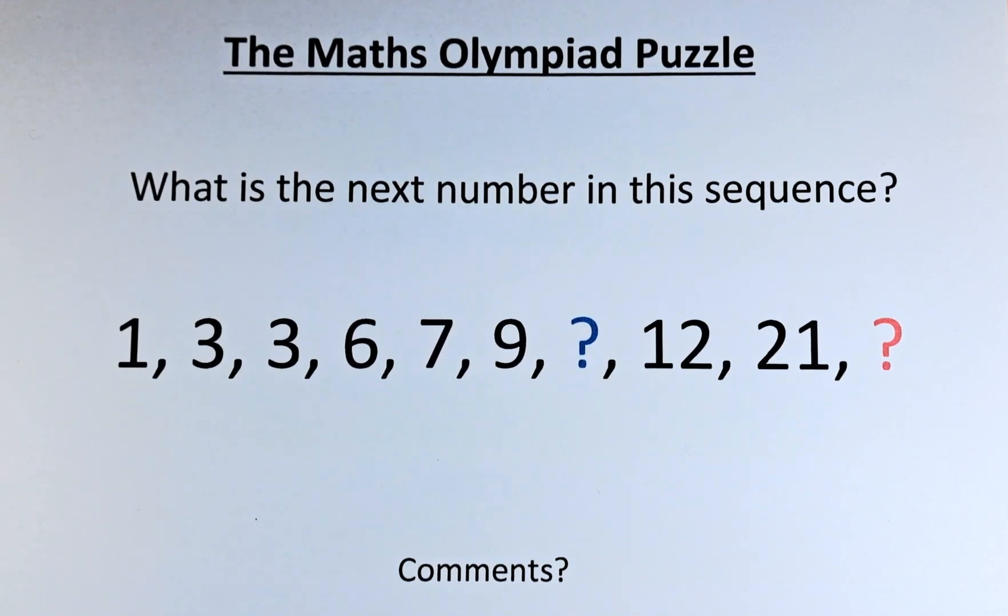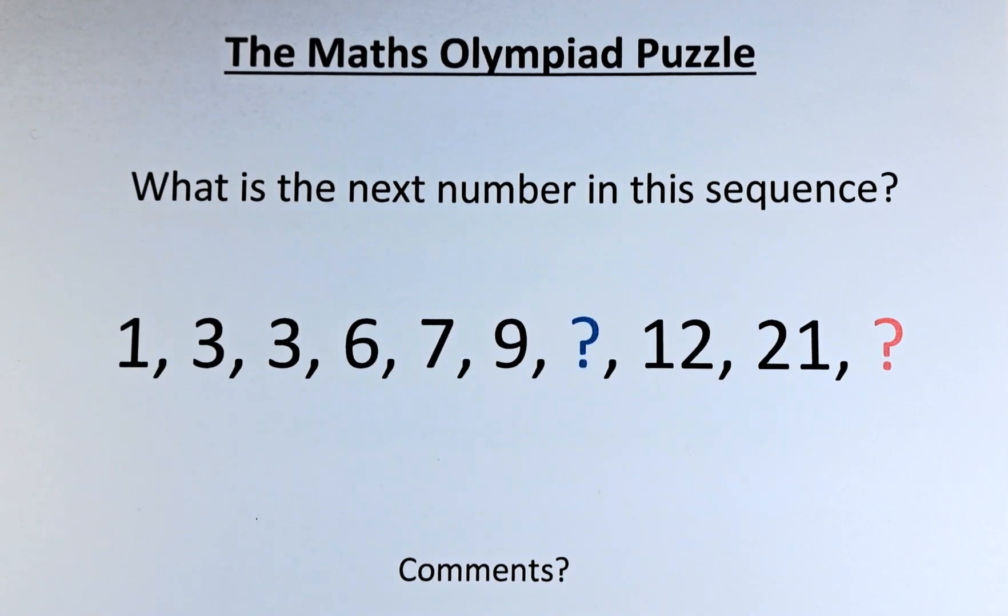The numbers in the puzzle start with 1, followed by 3, another 3, 6, 7, 9, a blue question mark, 12, 21, and a red question mark. So we have to find two answers, one is the blue question mark and the other is the red question mark in this puzzle.